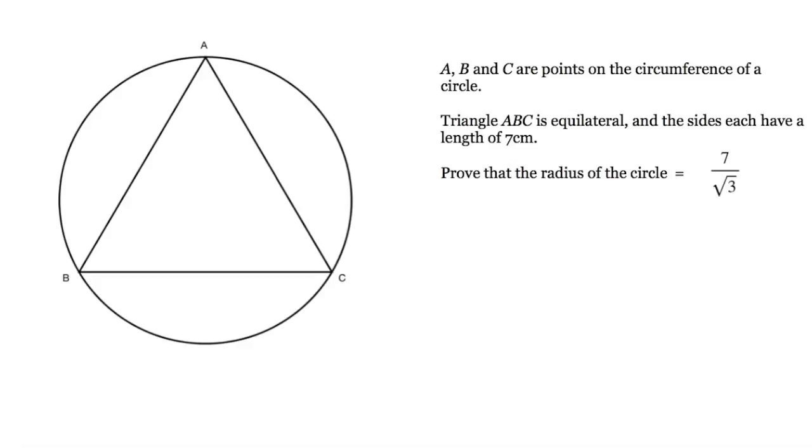The question says A, B and C are points on the circumference of a circle. Triangle ABC is equilateral and the sides each have a length of 7 cm. Prove that the radius of the circle equals 7 on square root 3.